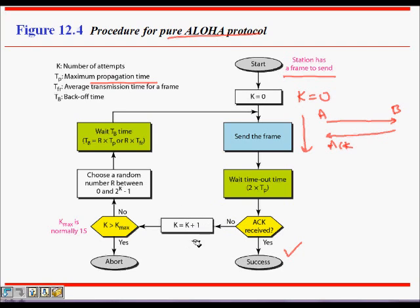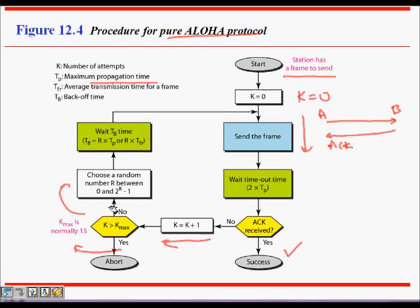If the ACK is not received, the station increments its attempt counter k. You can only try until a maximum of k_max, normally set to 15. If k exceeds 15, abort the transmission. Otherwise, choose a random number r between 0 and 2^k − 1, where k is the number of attempts. The waiting time will be r × Tp or r × Tfr.